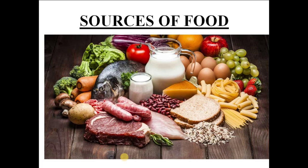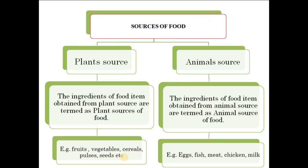We eat a variety of food, and many ingredients are needed to prepare different kinds of dishes. These ingredients we either obtain from plant or animal sources. Therefore, there are two main sources of food: plant source and animal source. The ingredients of food items obtained from plants are termed as plant source.